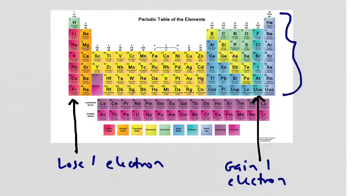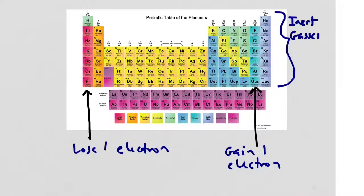We don't see much bonding action in the column farthest on the right. These elements are called inert or noble gases — they already have a full outer electron shell and so they don't need to form any bonds in order to satisfy the octet rule. Because of this, they don't tend to form bonds.